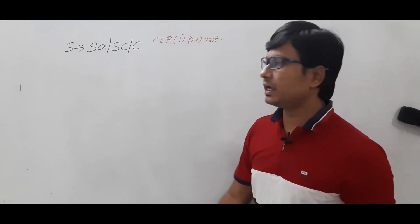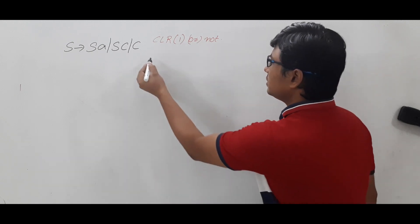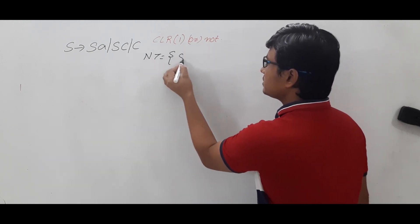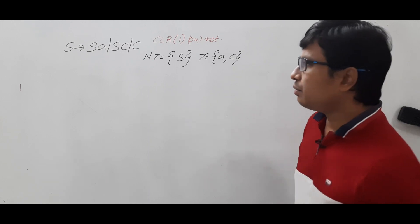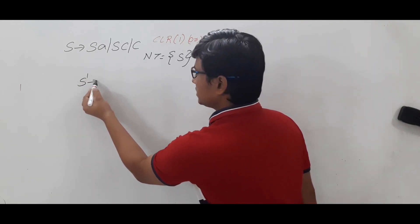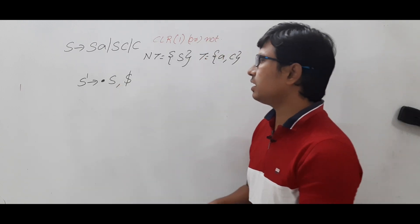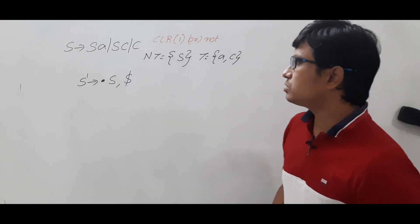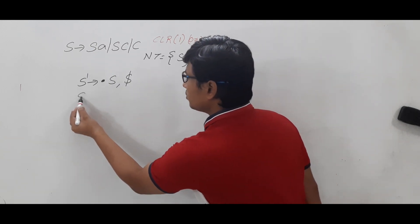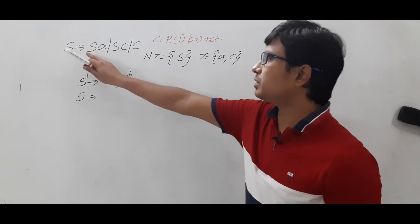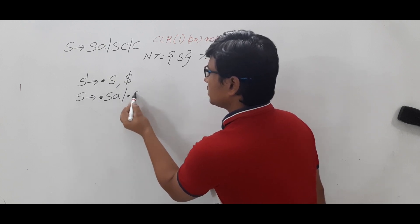If I want to construct the LR1 items from this grammar, first I need to identify what are the non-terminals and terminals. The non-terminals are only S and the terminals are small 'a' and small 'c'. Now I need to take the augmented production which is S' → •S, with lookahead dollar. The lookahead is dollar because this production is written in the dollar only. As there is a dot and after that there is a non-terminal, I need to compute the closure.